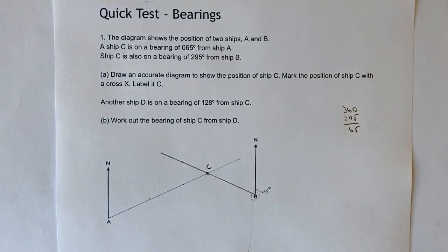So that answers the first part of the question. Draw an accurate diagram to show the position of ship C. Mark the position of ship C with a cross and label it C. So let's have a look now at another ship D is on a bearing of 128 degrees from ship C. So let's just very quickly sketch that out.